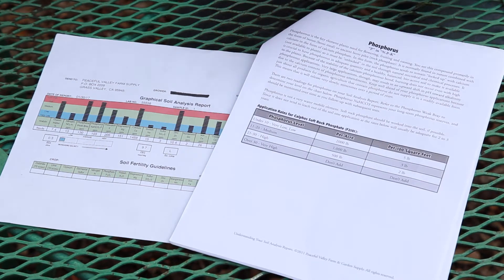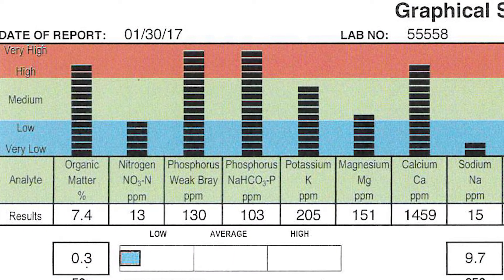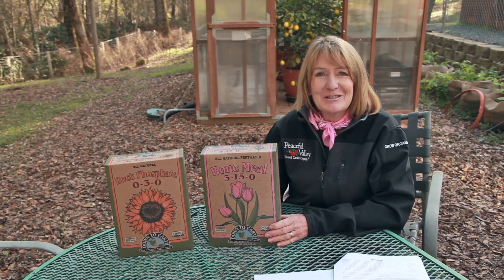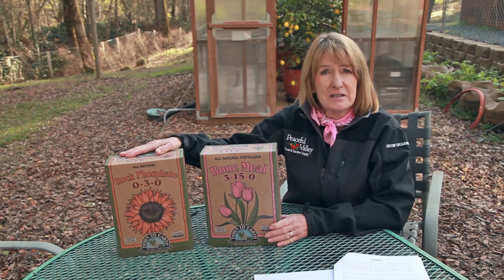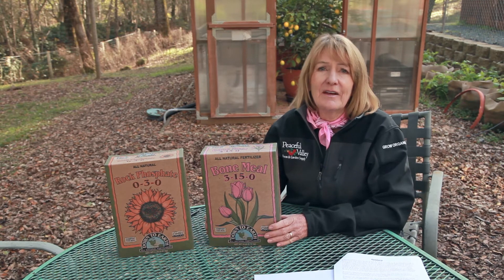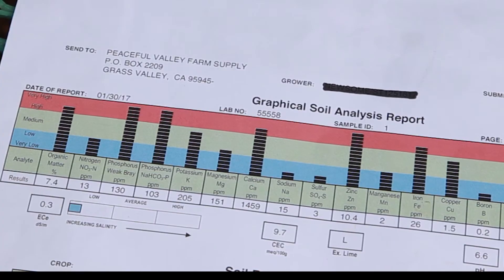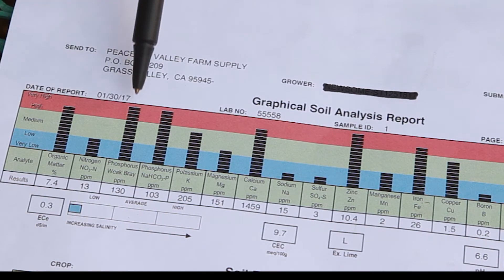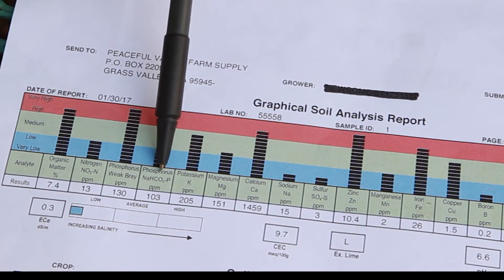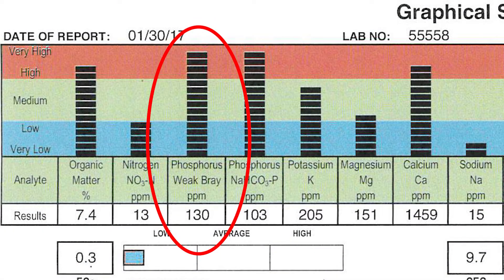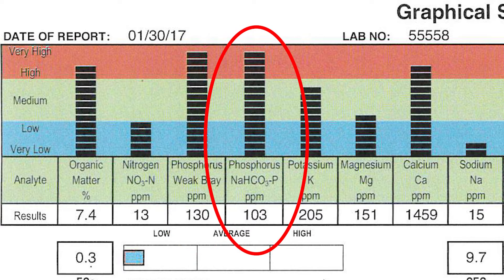The next nutrient on the chart is phosphorus. Phosphorus is important for flowering, fruiting, and rooting. Good sources for phosphorus are bone meal and rock phosphate. Phosphorus is usually slow release, so be sure and add it in advance of when your plants will need it. There are two readings for phosphorus on your soil analysis report. Refer to the phosphorus weak bray reading to determine your level on the chart in the soil analysis booklet. The other phosphorus reading represents your long-term phosphorus reserves and should be monitored over time as you follow up with subsequent tests.